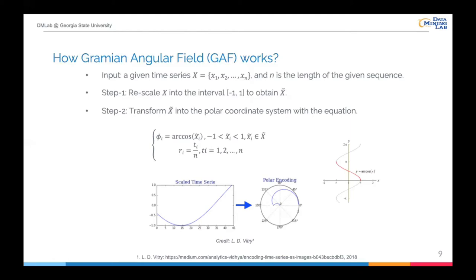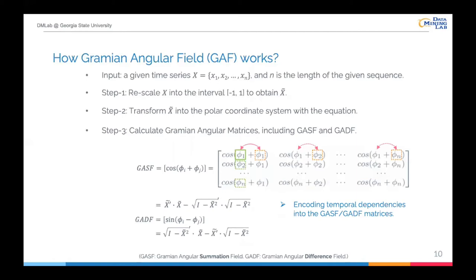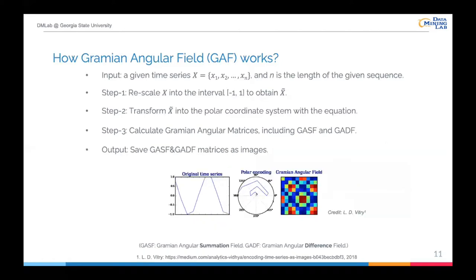However, in the GAF algorithm, it uses matrix to preserve temporal dependencies. And there are two forms, including GASF and GADF. S stands for the summation operation, and D stands for the difference operation. Let's take the GASF as an example. We can see it is an n-by-n matrix, and each element calculates the similarity between two angles corresponding to the time steps from the original time series. In this way, two forms of GAF matrix can be constructed. Eventually, we can save the matrix as images, and images will as inputs be transferred into CNN-based models.